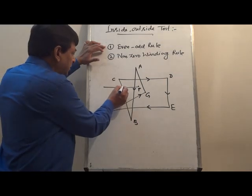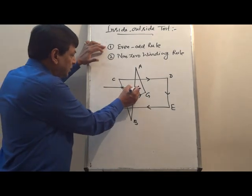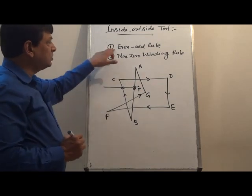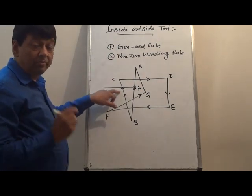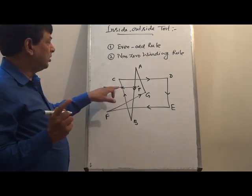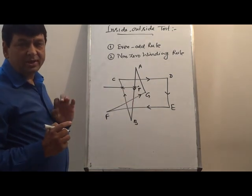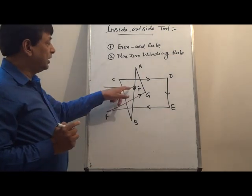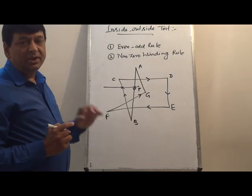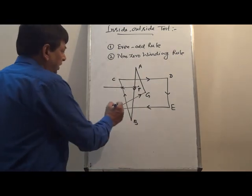We count the number of intersections with the polygon edges — that is 1 and 2. When the count of intersections with the polygon edges is odd, that means the point is inside the polygon. When the intersection or crossing count is even, the point is outside the polygon.